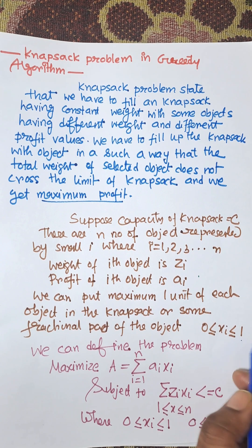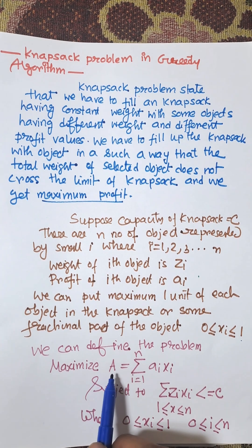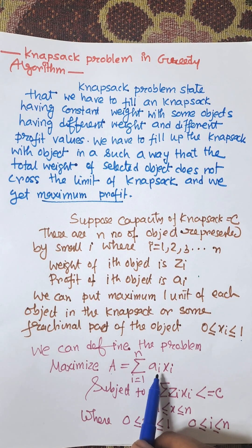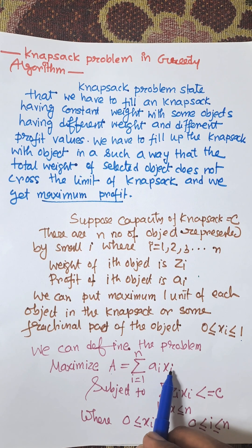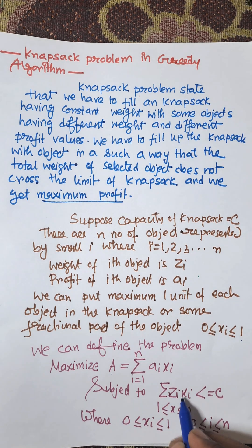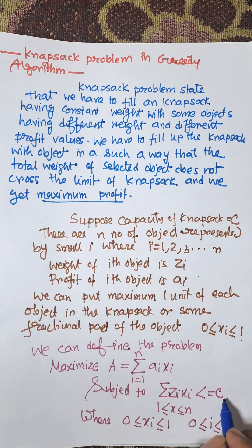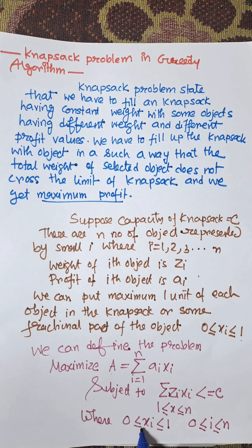We need to find the maximum profit: maximize the sum from i=1 to n of a_i · x_i, where a_i is the profit value and x_i is the unit (at most one unit can be taken). This is subject to the constraint that the sum of z_i · x_i must be less than or equal to C, where 0 ≤ x_i ≤ 1 for all i from 1 to n.